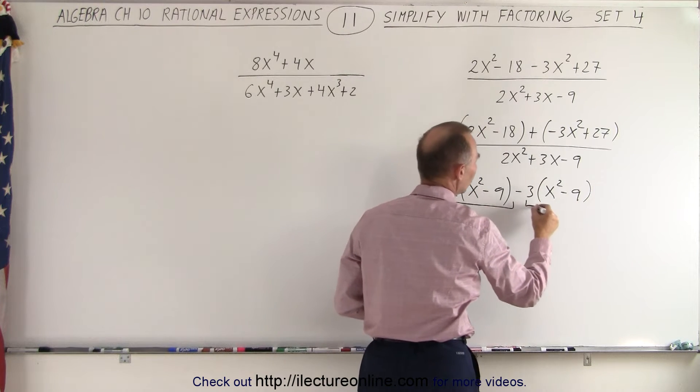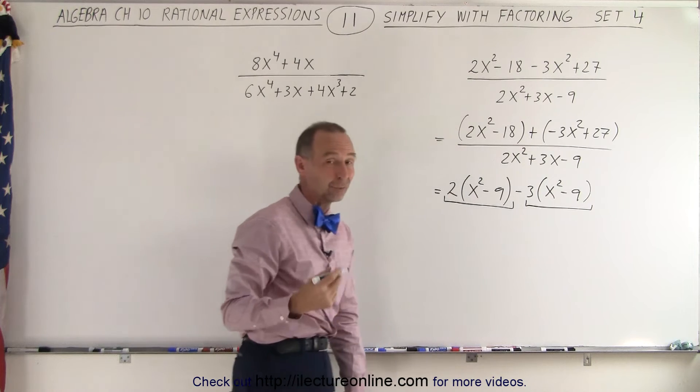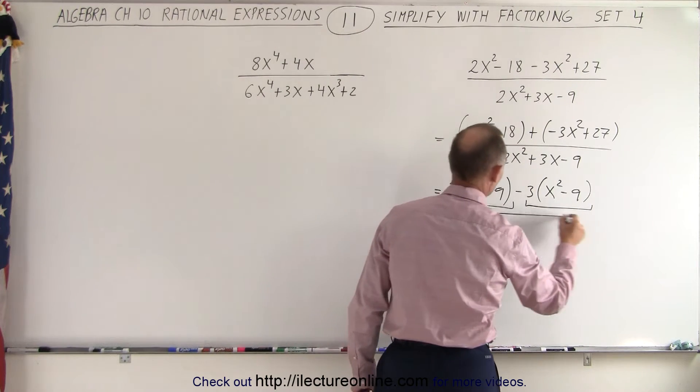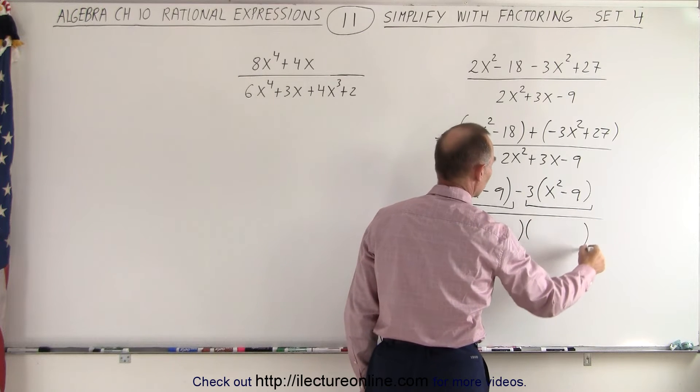Notice now, in this term and in this term, we have a common factor, x squared minus 9. In the denominator, we're probably just going to factor that, writing it as a product of two binomials.